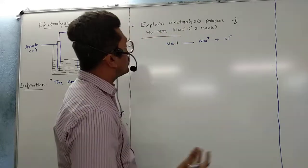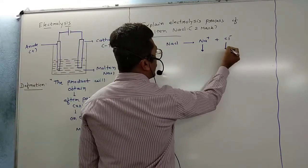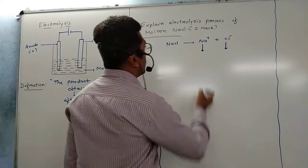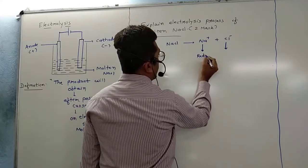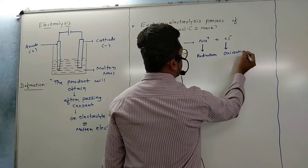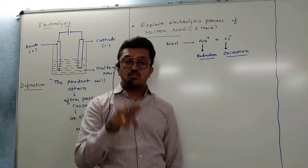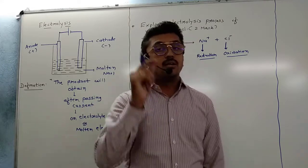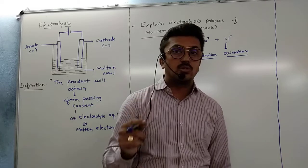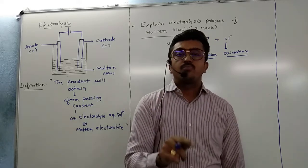So Na⁺ and Cl⁻ will be obtained from the ionization of sodium chloride. Now students, I will give you a very short and important technique: always keep in mind that a positive ion undergoes a reduction process, and every negative ion undergoes an oxidation process. Keep this important point in your mind — always: positive ion → reduction; negative ion → oxidation.